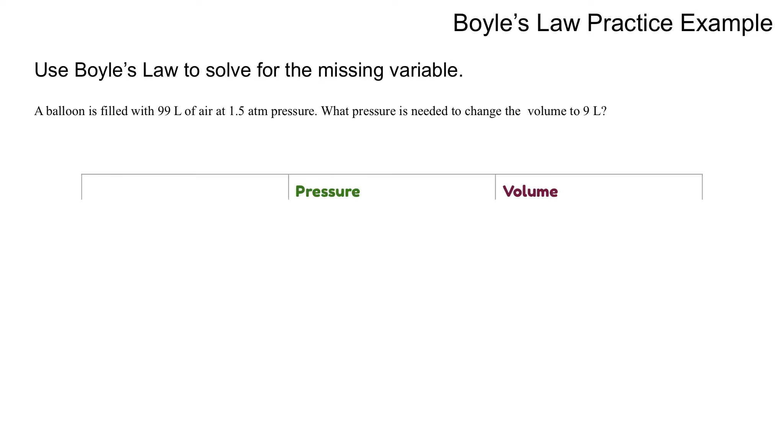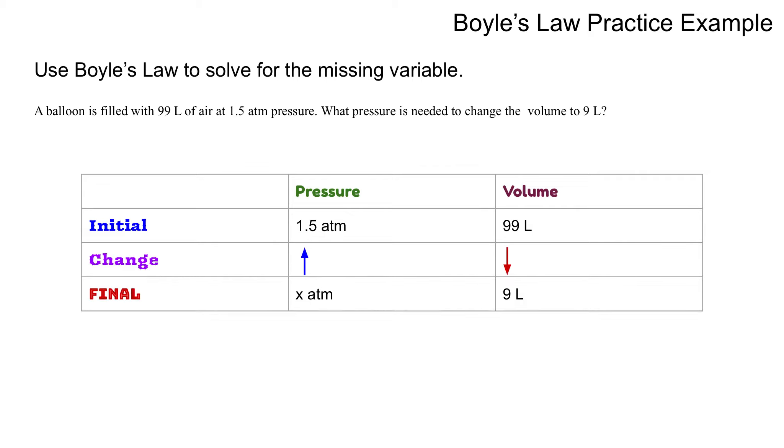In order to solve this, we need our table. My initial pressure was 1.5 atm. My initial volume was 99 liters. My pressure increased because my volume decreased by how much? I went to 9. So what is the relationship between 99 and 9?